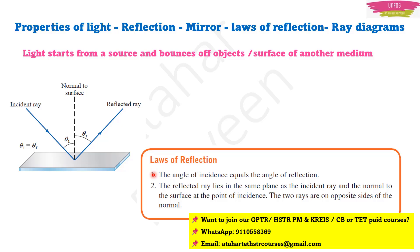The first law states that the angle of incidence equals the angle of reflection — always, whenever reflection occurs, θᵢ = θᵣ. The second law states that the incident ray, the reflected ray, and the normal to the surface all lie on the same plane, and the two rays — the incident ray and the reflected ray — are on opposite sides of this normal. These are the two laws of reflection.